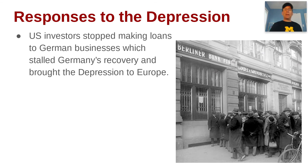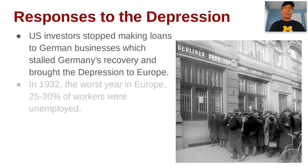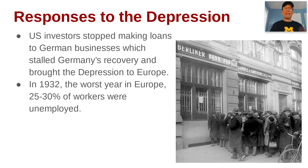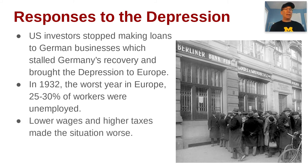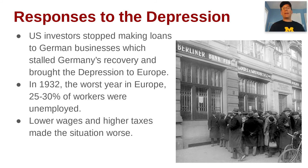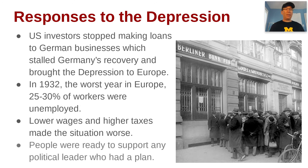In terms of responses: the U.S. stopped making loans to German businesses, stalling the German economy. 1932 was the worst year in Europe — and coincidentally the worst year in the United States as well. About 25 to 30 percent of workers in Europe were unemployed, with Germany at or slightly above 30 percent. Lower wages combined with higher taxes made the situation worse — people had less money, taxed at a higher rate, so nobody was spending and businesses kept failing. People were ready to support any political leader who had a plan, and we'll see later how this leads to extremism.